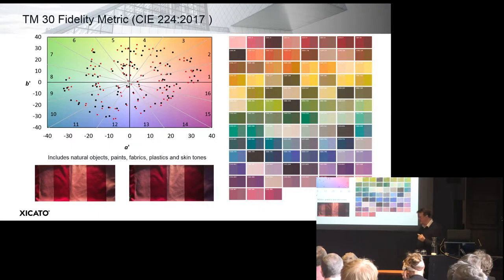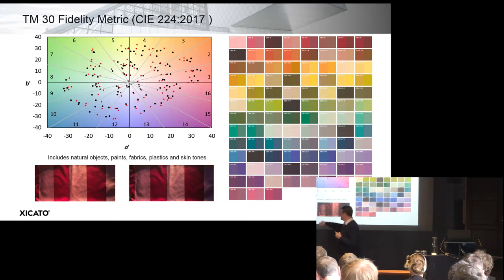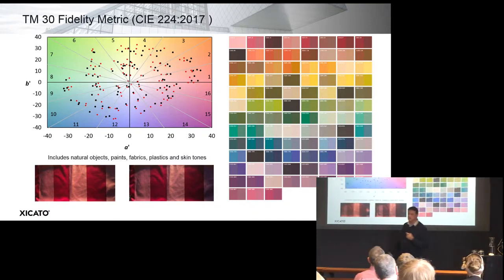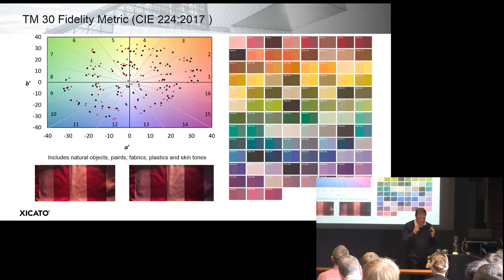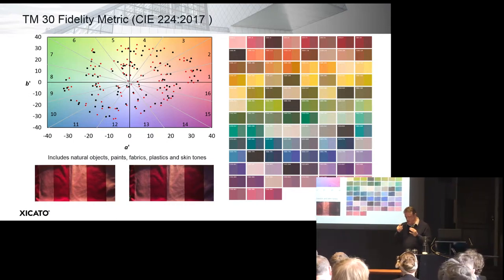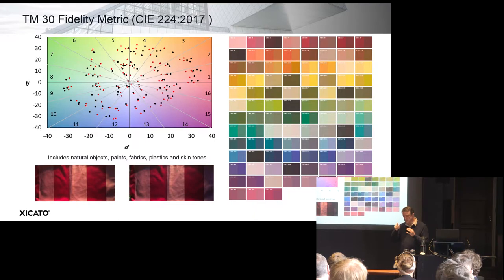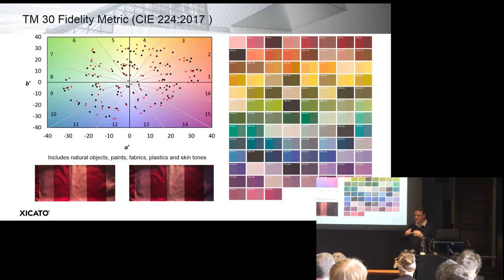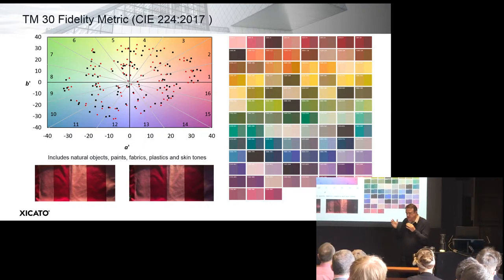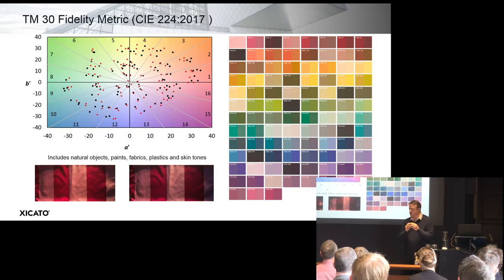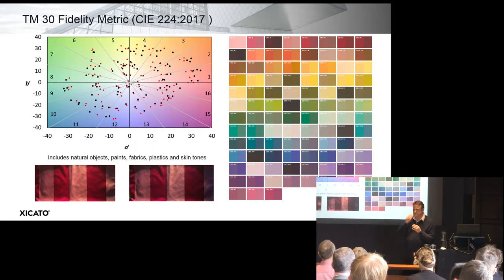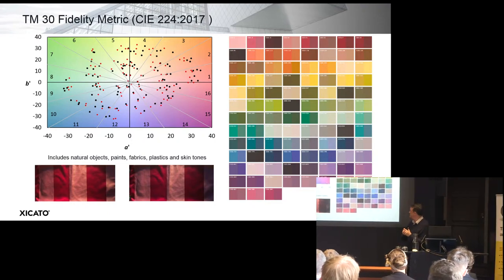What I like about TM30 is that instead of 8 or 15 colour evaluation samples, there are 99 — so it's more accurate. These are real-world colour evaluation samples: paints, fabrics, plastics, and so on. It's not just a circle of colours equidistant in hue as in CIE 13.3; it's real-world colours and a complete average. If you want to be precise about skin tones, for example, you can look at specific colour evaluation samples — 15 and 18, from memory.